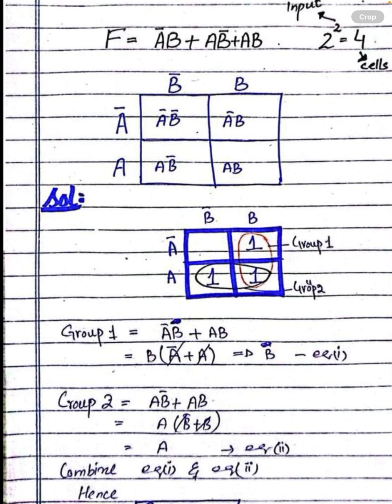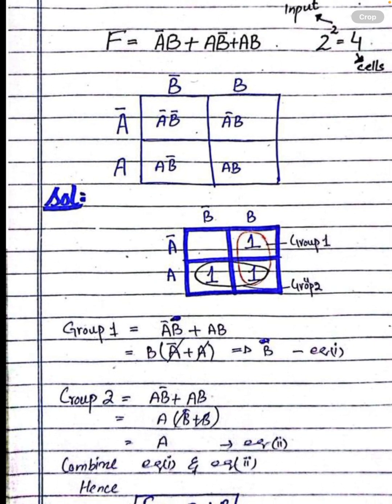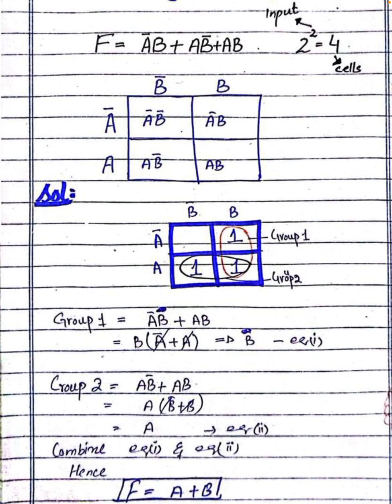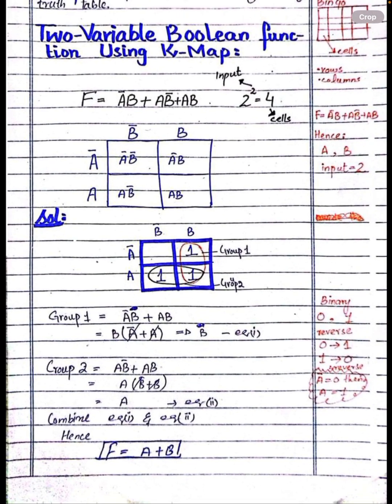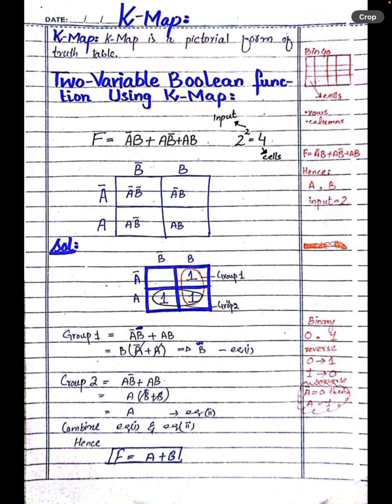Then we have to place a b-bar — we put 1 there. And where we get ab according to the function, we get 1 there as well. It means that we get 1 in three boxes.